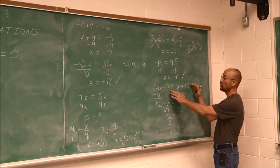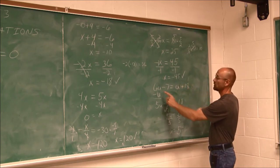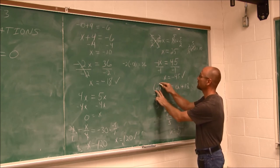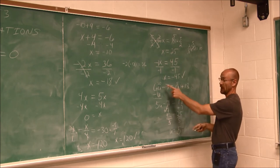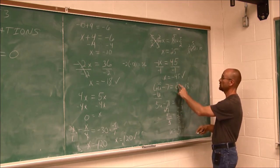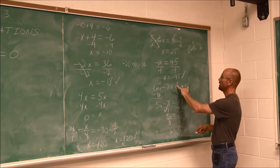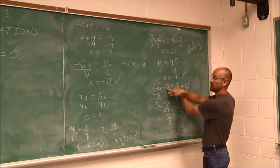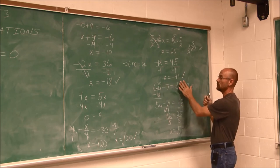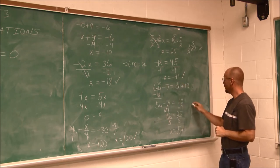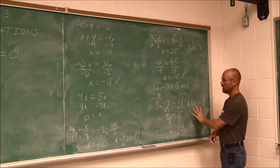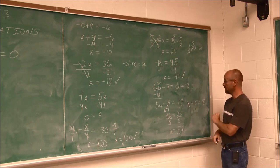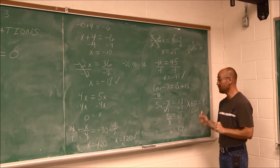We always check our work — go back to the original problem. 6 times 5 is 30, minus 7 equals 23. On the other side, 5 plus 18 is also 23. 23 equals 23 — I've checked my work. Now the problem that was erased — x plus 15 equals 8 — try this one on your own and see what you get. Remember, check your work.